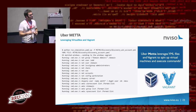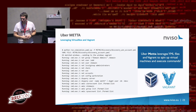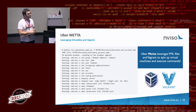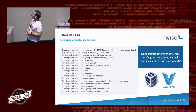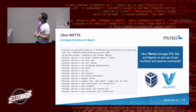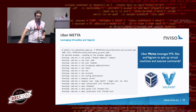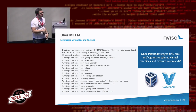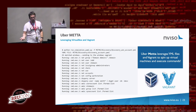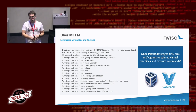Uber Meta is a less well-known tool, mainly developed by Chris Gates — also known as 'carnal0wnage' on Twitter. It uses Vagrant and VirtualBox to spin up machines and run commands, similar to Atomic Red Team. It uses YAML files for configuration where you specify which commands you want to run.